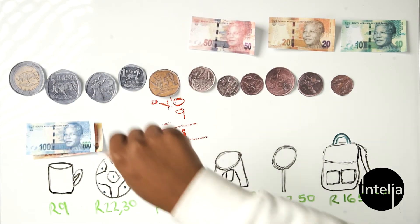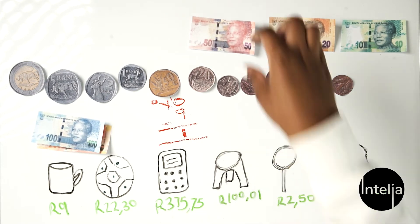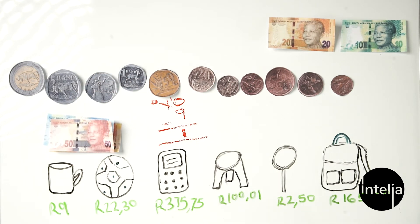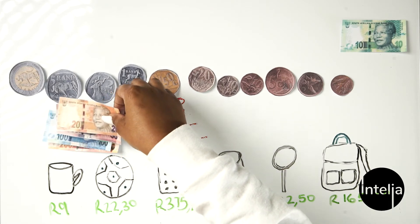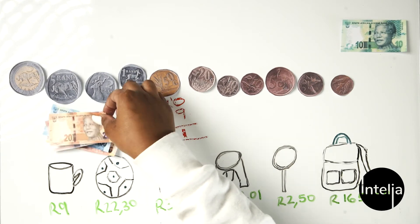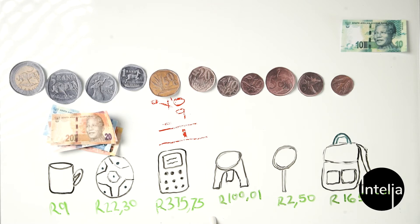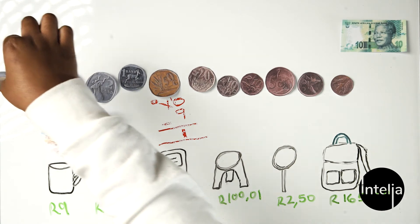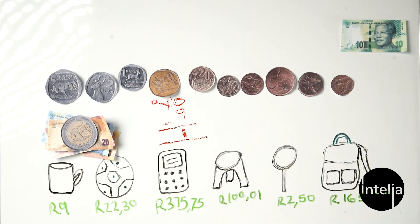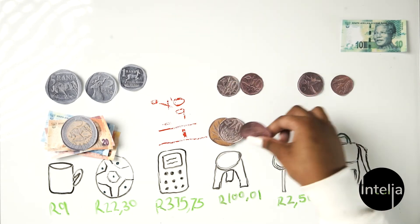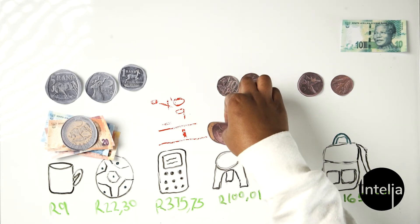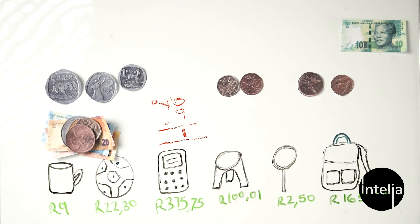So for 375 rand 75 cents: you have 200 rand here and 100 rand here, which gives you 300 rand. Then you add 50 rand to get 350, then add 20 rand to get 370. You're looking for 375 rand 75 cents, so you add a 5 rand to get 375. For the 75 cents: 50 cents plus 20 cents plus 20 cents plus 5 cents equals 75 cents. All together that makes 375 rand 75 cents.